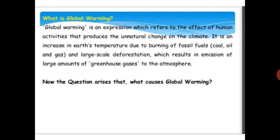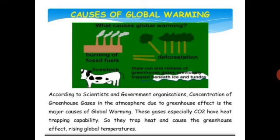What causes global warming? The causes of global warming include burning of fossil fuels, livestock, and deforestation. According to scientists and government organizations, the concentration of greenhouse gases in the atmosphere due to the greenhouse effect is the major cause of global warming.